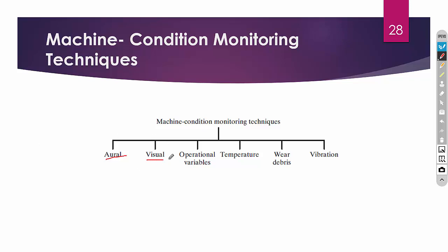The next type is visual-based condition monitoring, which is mostly used in machining operations. For example, when turning on a lathe, you watch the tool that is touching the workpiece. If you see any unwanted movements in the tool, it means there is some fault in the tool post. Or if the workpiece is rotating in a nonlinear manner, it means there is some fault at the lathe.